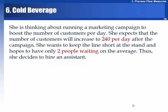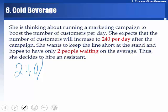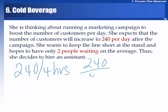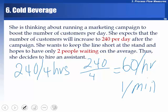Due to a marketing campaign, demand is expected to go from 120 per day, or 30 per hour, up to 60 per hour — from 0.5 per minute to 1 per minute. Throughput is now 240 per four hours, or 1 per minute. So R equals 1 per minute.